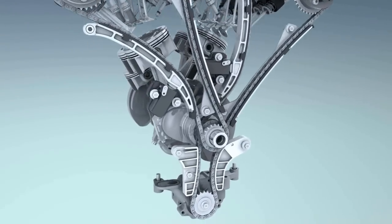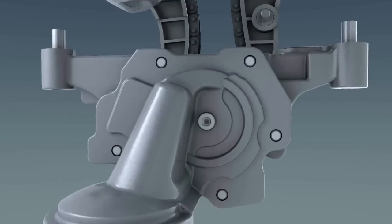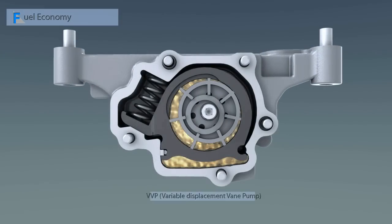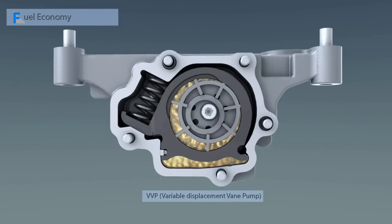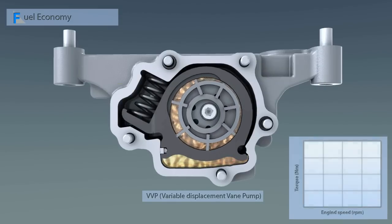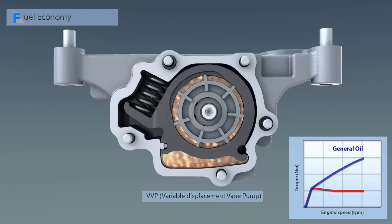During acceleration, valve timing is optimized to improve volumetric efficiency and performance. A variable displacement vane pump is applied to minimize pumping work by controlling appropriate oil flow in accordance with engine operating conditions.